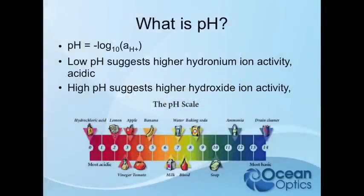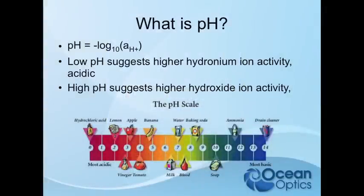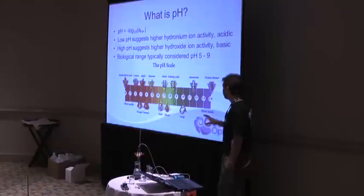A low pH would suggest a higher hydronium ion activity. We see here a typical scale of things that are acidic and common, like lemons and vinegar, and then ammonia and drain cleaner on the high end, which would suggest more of a hydroxide activity. The biological range we're mainly concerned with is five to nine — things like blood and food.